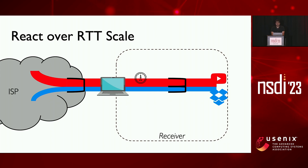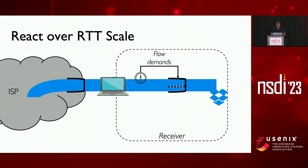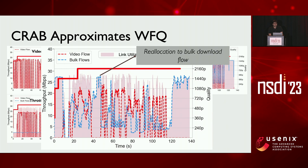When the video flow stops, we'll infer its demand over a few RTTs to make sure that its demand has really reduced, at which point we will reallocate its capacity to the bulk flow. Now the bulk flow can grow and fill the link over time. While we are waiting for the impact of throttling to kick in, we do end up underutilizing the link for some time. But some amount of link underutilization is imminent in order to effectively control the flow shares. And this strategy works — not only is the video quality highest, but at times when the video flow is not using all its share, the bulk flow is filling in the gaps.